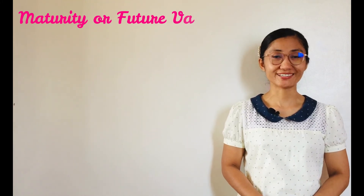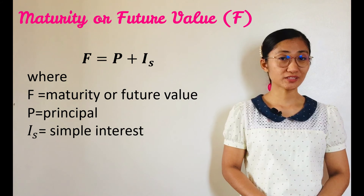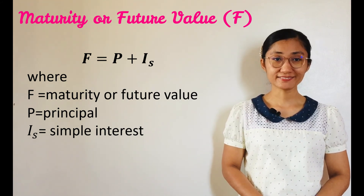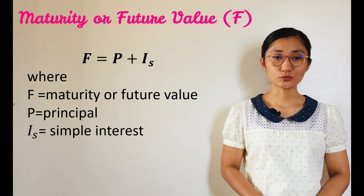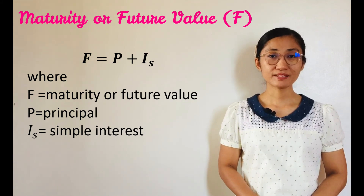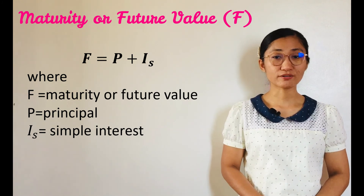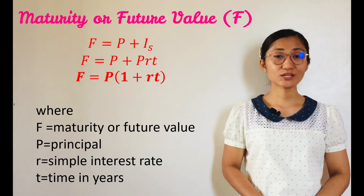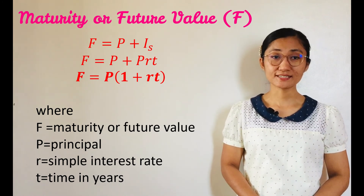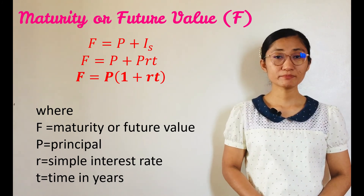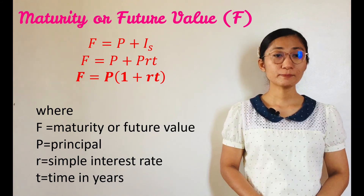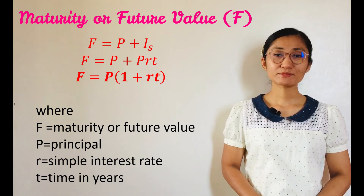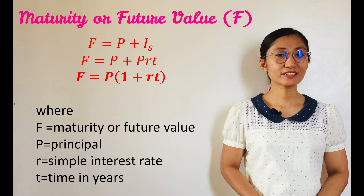In real life, it is important to determine the maturity or future value of an amount invested, not just the simple interest. Given F as the maturity value, P as the principal, and I sub S as the simple interest, the maturity or future value is defined by F equals P plus I sub S. Since I sub S equals PRT, this can be rewritten as F equals P plus PRT, or F equals P times the quantity of 1 plus RT.